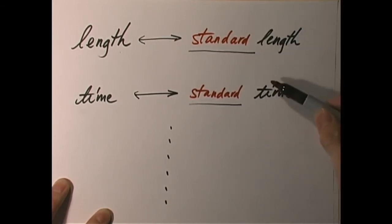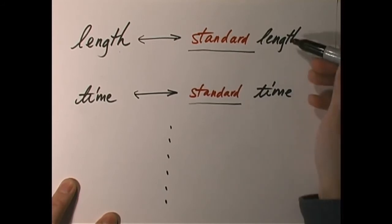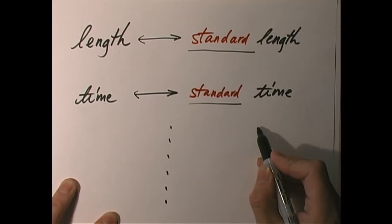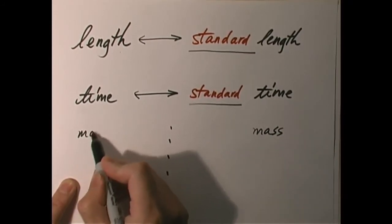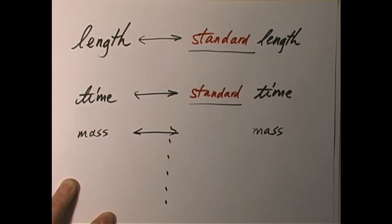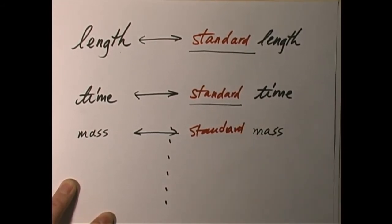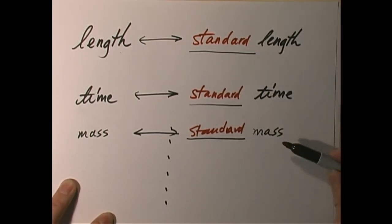So the standard length, standard time, and there are other standard quantities. In mechanics, which is only part of physics, we only have three basic standards: that of length, time, and mass. So in order to measure mass, we must have a standard mass as well. It is necessary to establish three basic standards — that of length, time, and mass — so that we can measure quantities in mechanics.